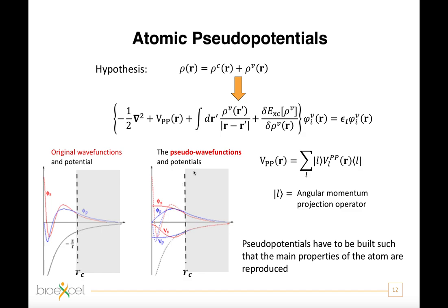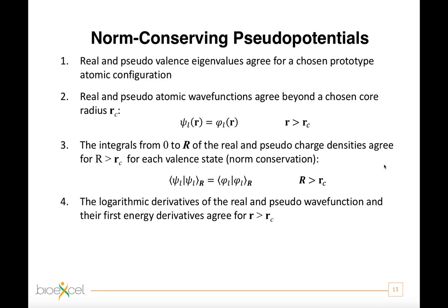Therefore, many different pseudopotential recipes have been devised in the years, with different features, pros and cons. One of the most widely used classes of pseudopotentials is the so-called norm-conserving pseudopotentials, which require the four conditions here listed to be met.